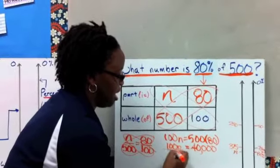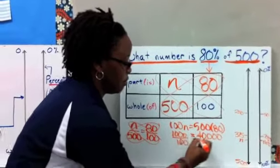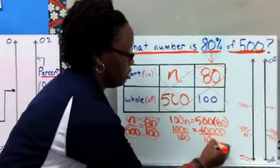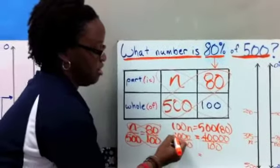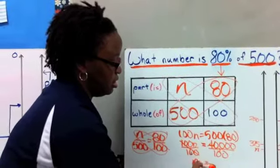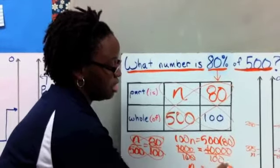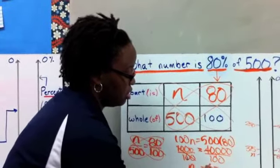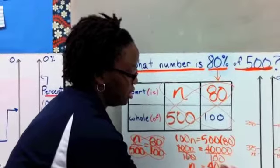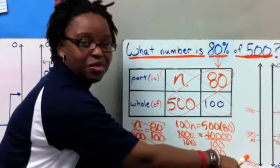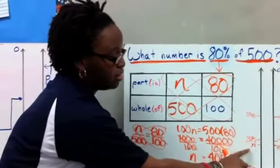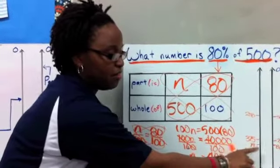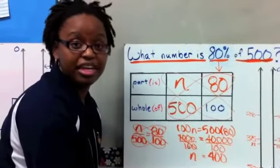So 500 times 80 is 40,000. And we're going to divide that by 100. 100 divided by 100, of course, is now just n here. And 40,000 divided by 100 gives us an answer of 400. When we go back and evaluate our vertical number lines, 400, just a little bit more than 375. And so that's a reasonable answer.